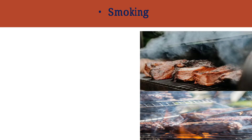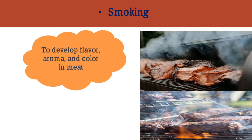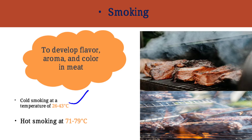Smoking is another method of meat preservation in which smoke is used to develop flavor, aroma, and color in the meat. There are two methods of smoking: cold smoking at a temperature of around 26 to 43 degrees centigrade, and hot smoking which is done at 71 to 79 degrees Celsius.